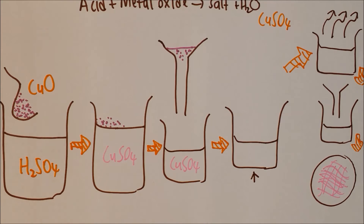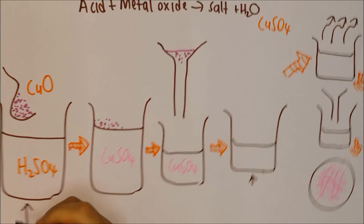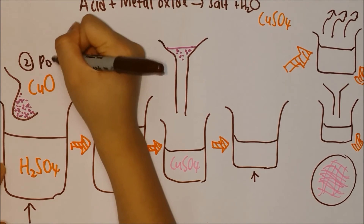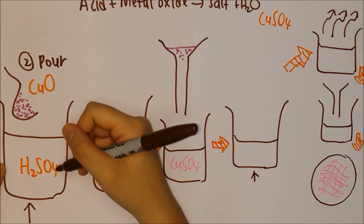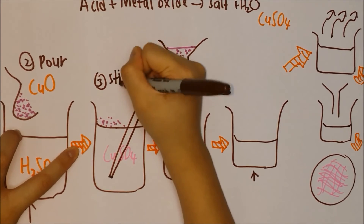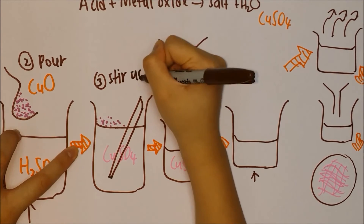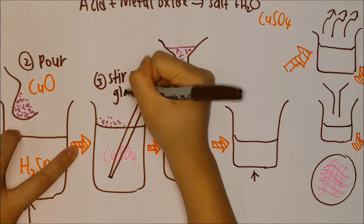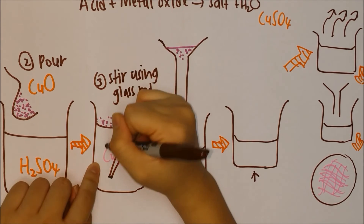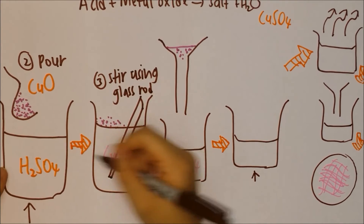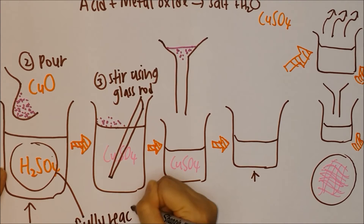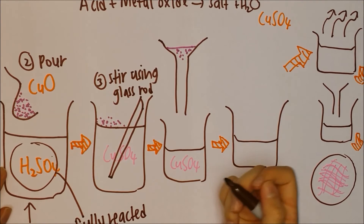First, heat the sulfuric acid. After heating, pour the copper oxide powder into the sulfuric acid, then stir it using a glass rod. Keep adding copper oxide powder until it can no longer dissolve — this ensures the sulfuric acid has been fully reacted with the copper oxide powder.